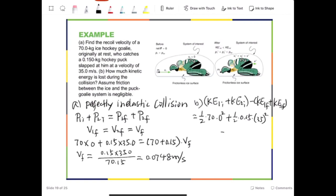Finally, goalie and the puck are together, so we can treat them together as a single object, which has a mass of 70.15, and then they have the same speed, 0.0748 squared. This will give us the change in kinetic energy, or the loss of kinetic energy, which is equal to 91.7 joules.